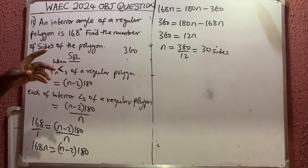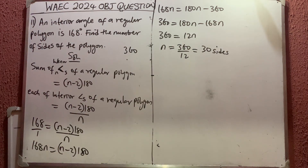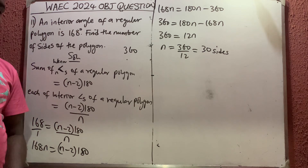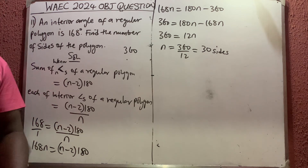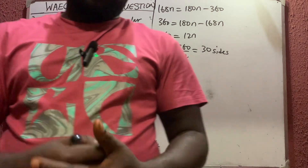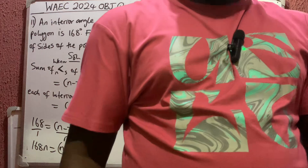So this regular polygon has 30 sides, since n is the number of sides. It's a very simple question. Please don't forget to like the video and encourage us by subscribing. Bye!